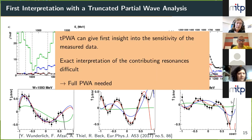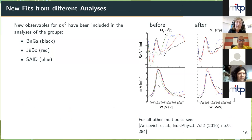Data points at the very edges (at cos θ = ±1) are especially important to constrain the contributing waves. To really extract quantum numbers of contributing resonances, a full partial wave analysis is needed. All measured data sets were included in three different partial wave analyses: the Bonn-Gatchina group, Jülich-Bonn, and the SAID group. They compared multipoles before and after including our data — for example the M₁₋ multipole for pion photoproduction shows deviations before but the curves become much more similar after including the data.